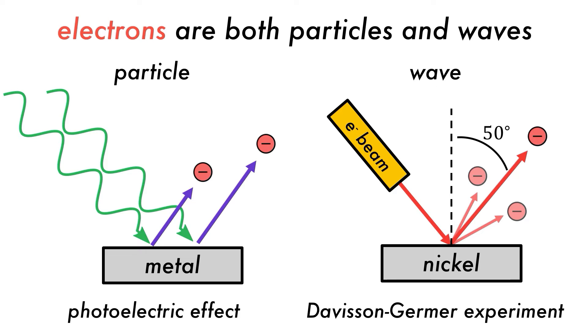From quantum mechanics, it was shown that electrons are both particles and waves. So now it is time to discover how electrons are arranged in an atom.